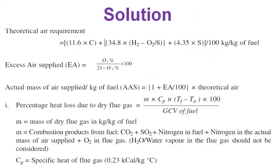First, we calculate the theoretical air requirement using the formula: 11.6 × C + 34.8 × (H₂ − O/8) + 4.35 × S, divided by 100, in kg per kg of fuel. The excess air supplied is given by: (% O₂ / (21 − % O₂)) × 100. The actual mass of air supplied per kg of fuel is: (1 + excess air/100) × theoretical air.